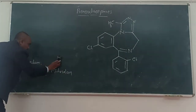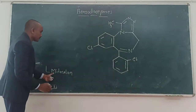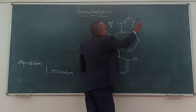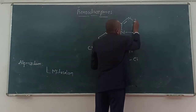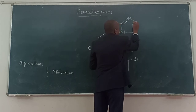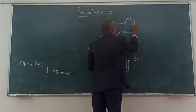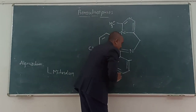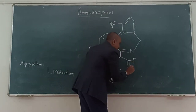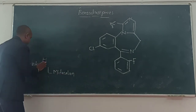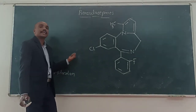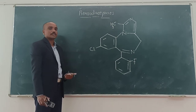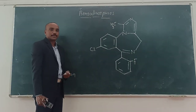The last structure is midazolam. Similarly, this value comes into the midazolam structure. The chlorine is replaced with a fluorine atom, and it becomes the structure for midazolam. Likewise, you can remember all the structures for the benzodiazepine group.